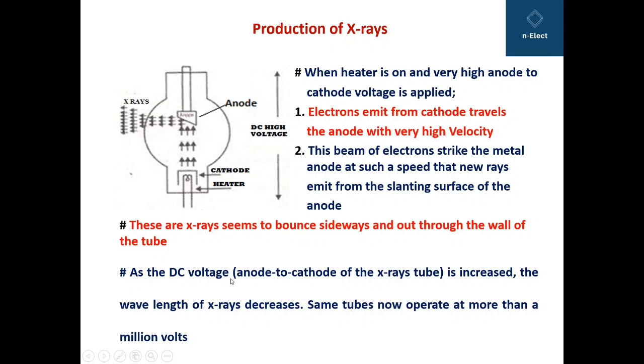As the DC voltage from anode to cathode of the X-ray tube is increased, the wavelength of X-rays decreases. The same tube can now operate at more than a million volts.